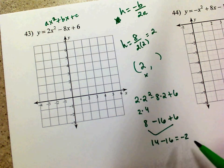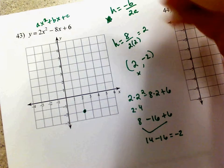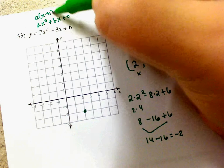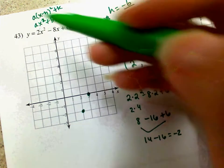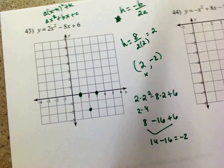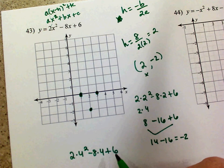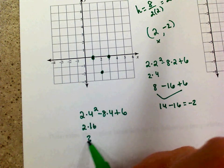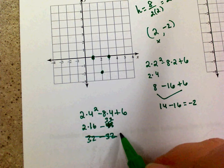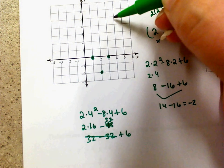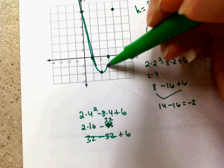The 'a' does not change between vertex and standard form. The a is 2, so I always go right 1 and up 2, and left 1 up 2 as well. For one more point, I'll plug in x equals 4: 2 times 16 minus 8 times 4 plus 6 equals 32 minus 32 plus 6 equals 6. So at x equals 4, y equals 6, and at x equals 0, y equals 6. Connect the points and there's the parabola.